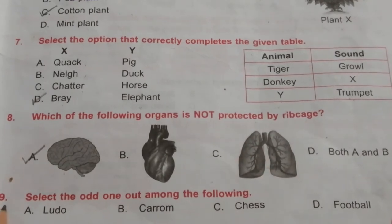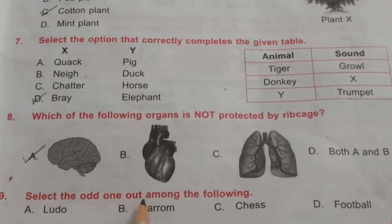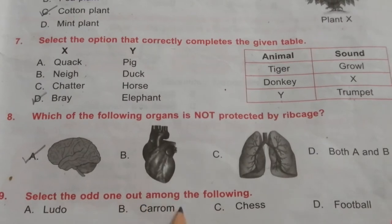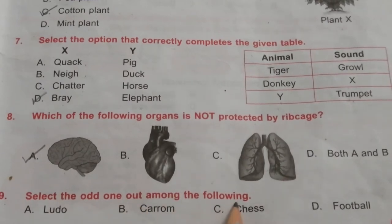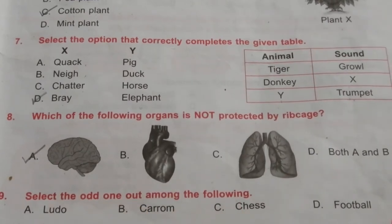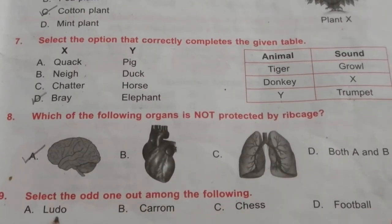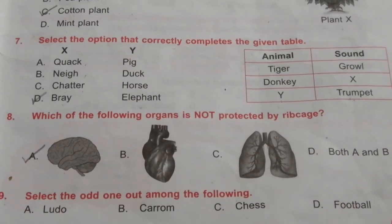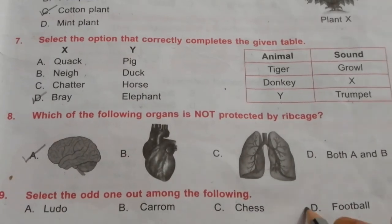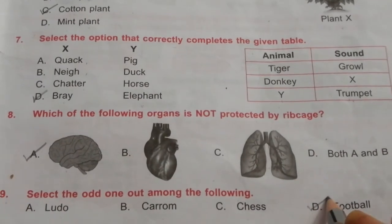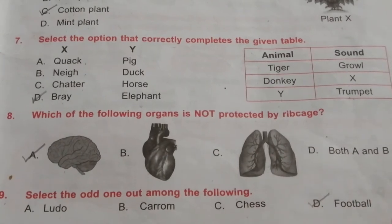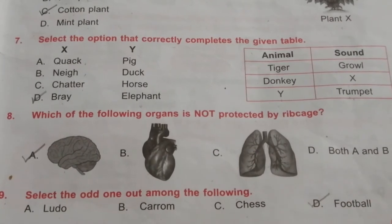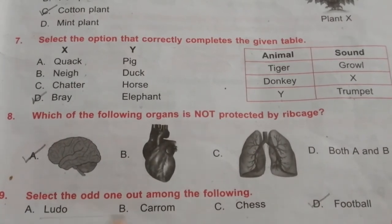Question 9: Select the odd one out among the following — Ludo, Carom, Chess, Football. The answer is D: Football, because football is an outdoor game while the other three are indoor games.